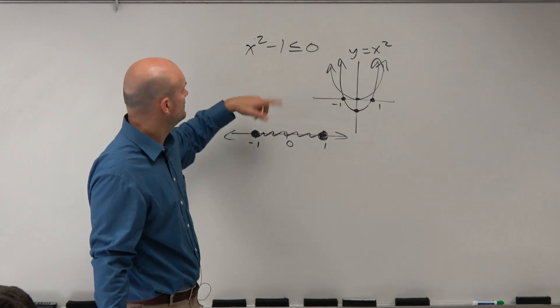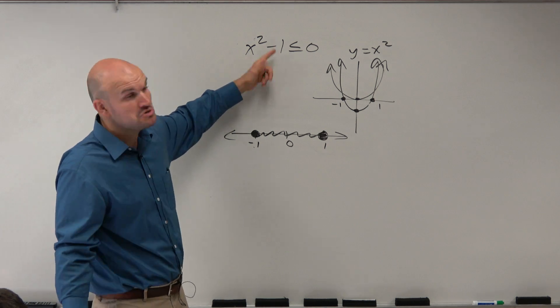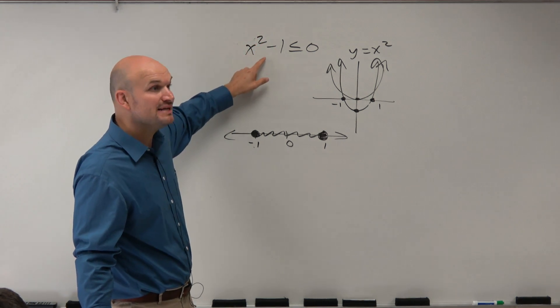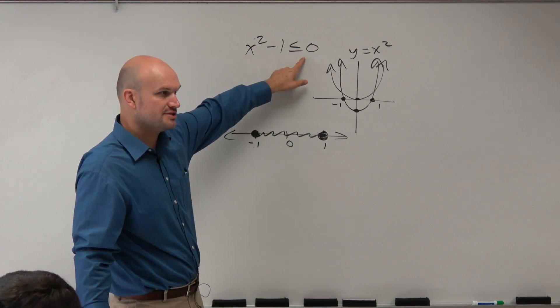What about, let's just do 1 half. 1 half squared is 1 fourth. 1 fourth minus 1, don't even need to think about it. We know it's going to be negative, right? We know 1 is bigger than 1 fourth, so it's going to be some negative number, which is obviously less than 0.